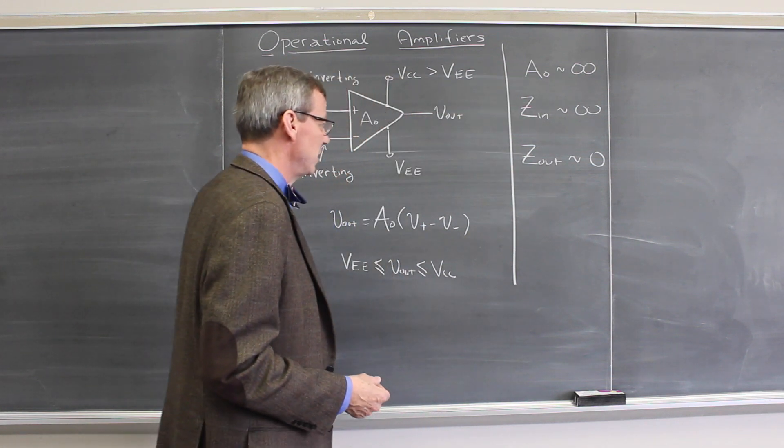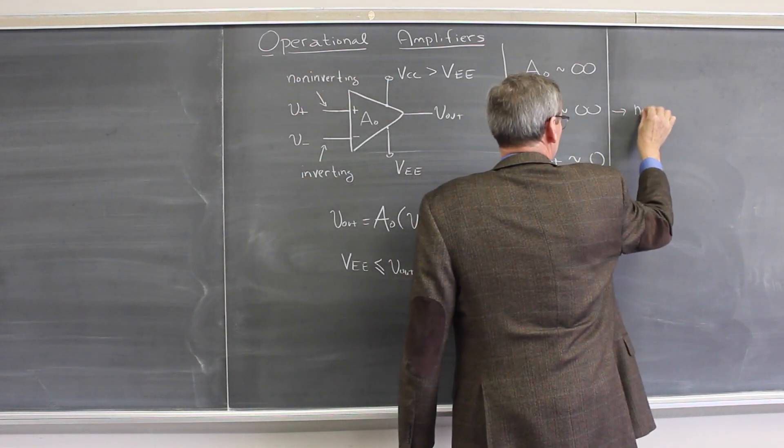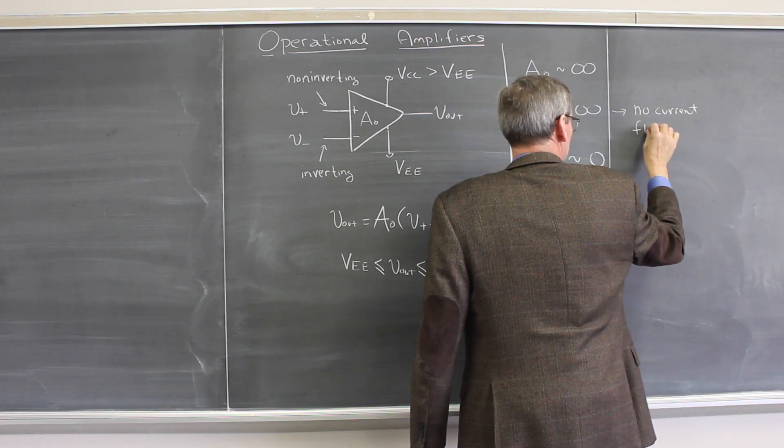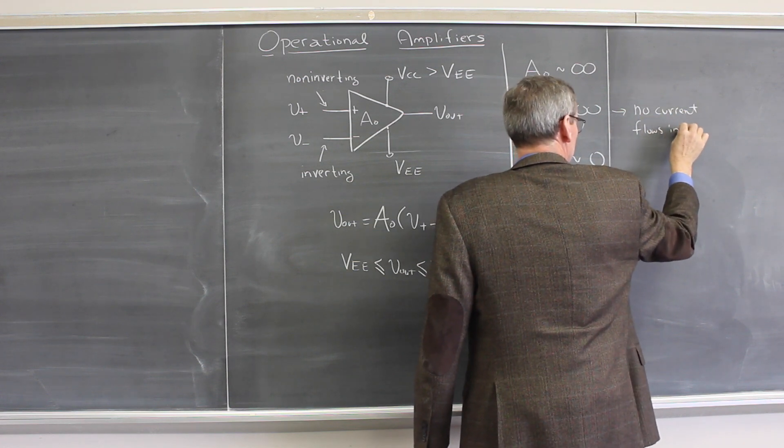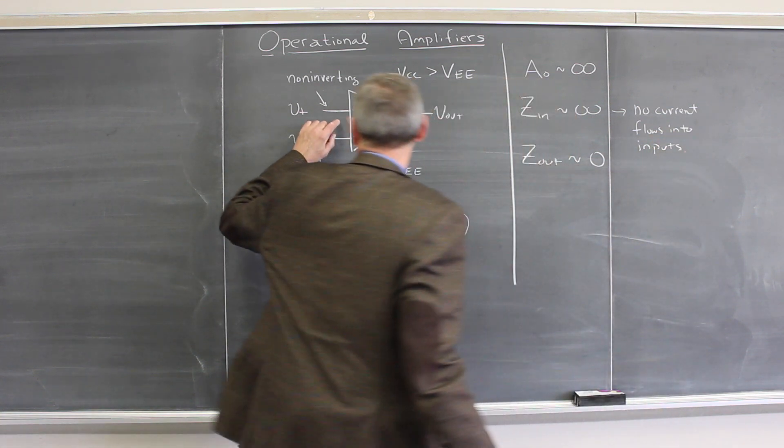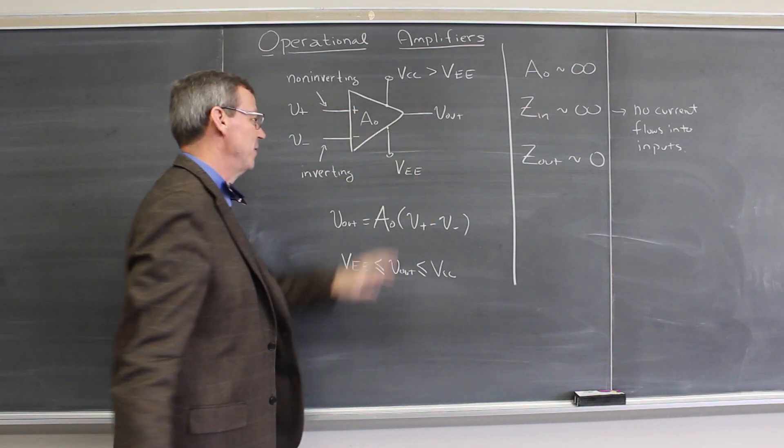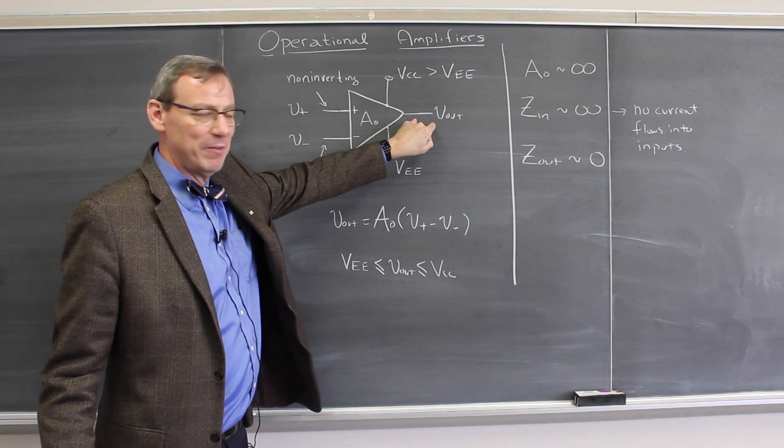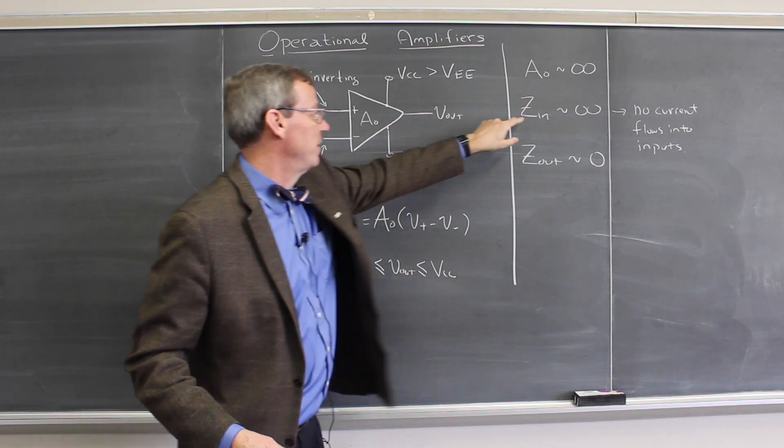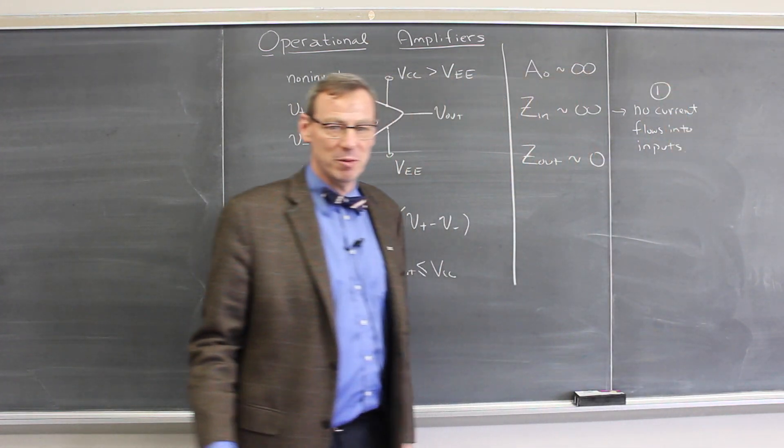Under the assumption of those approximations, infinite input impedance means that no current flows into the inputs. Infinite input impedance—no current can flow into this. It doesn't say anything about current flowing out of it. As much current as needed can go out of the op amp, but no current can flow into the inputs of the op amp. So that's infinite impedance. We sometimes call that rule number one for op amp performance.